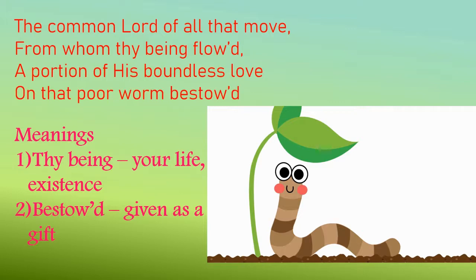In the second stanza, 'The common Lord of all that move, from whom thy being flowed, a portion of his boundless love on that poor worm bestowed,' the poet says that God the creator is common for all. The Lord who created us also created this tiny creature. The poet asks the reader to acknowledge and respect the fact that the one who made us is also responsible for making this worm. 'Bestowed' means given as a gift — as God loves us, the same way he loves all his creatures.